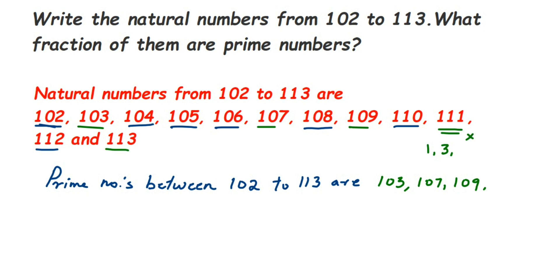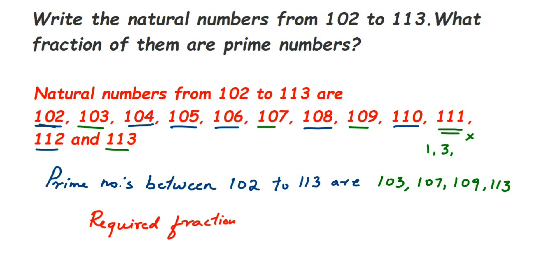And 113 — yes, it is a prime number. So let's count the total natural numbers: 1, 2, 3, 4, 5, 6, 7, 8, 9, 10, 11, 12 — we have 12 natural numbers. Out of these, we got 4 prime numbers: 103, 107, 109, and 113. So the fraction is 4/12, which simplifies to 1/3.